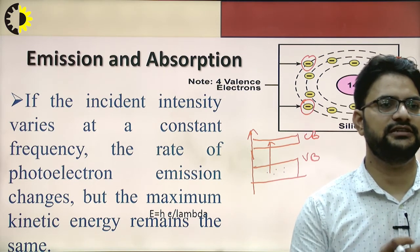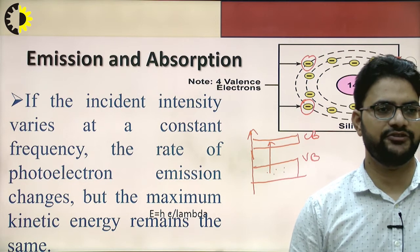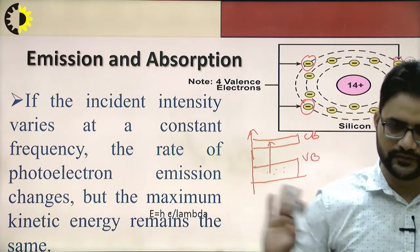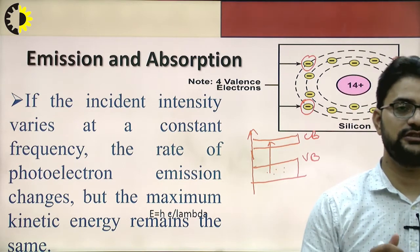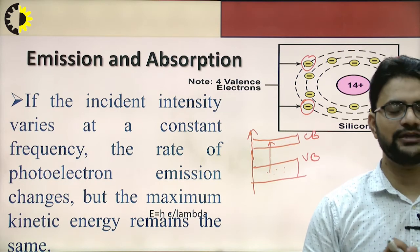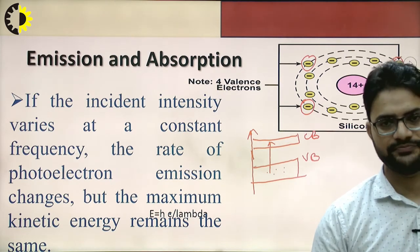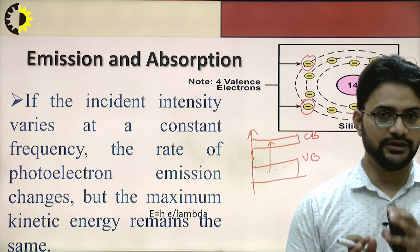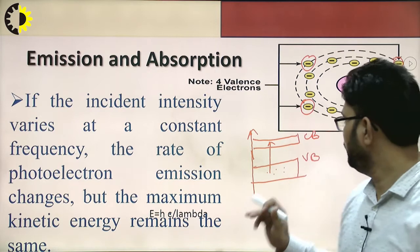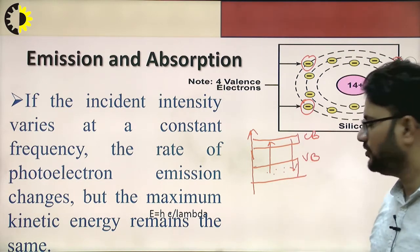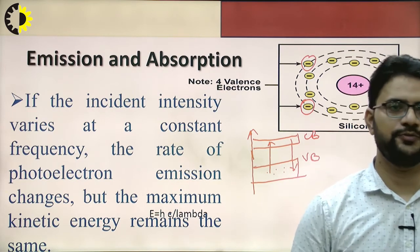This is only possible whenever the incident light has a higher frequency required to detach the electron from the silicon material. If the incident light is varied at a constant frequency, the rate of photoelectron emission changes, but the maximum kinetic energy remains the same. This is the postulate that can be drawn. When an electron loses energy from a higher energy level towards a lower energy level, it emits energy in the form of heat or light. This is the basic phenomenon of emission.